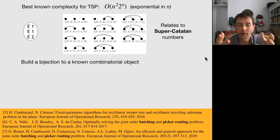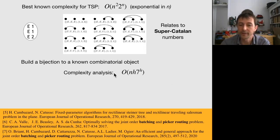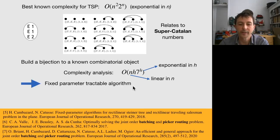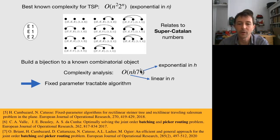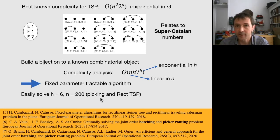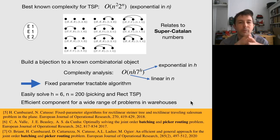This leads to the complexity already mentioned in the introductory video: linear in N but exponential in H — a fixed-parameter tractable algorithm in H. This makes sense for applications with a low value of H, which is the case for picking, where we can solve problems with six middle aisles — large enough for most real-life warehouses — whereas a general TSP solver would not be able to solve these datasets efficiently. This is how we can handle a wide range of problems in warehouses.